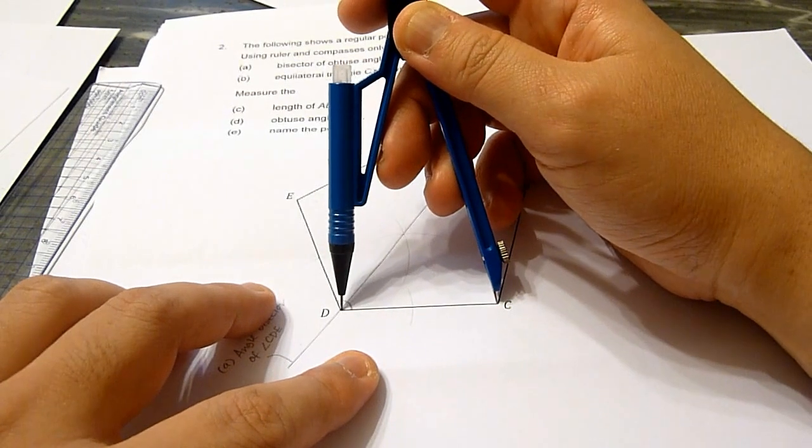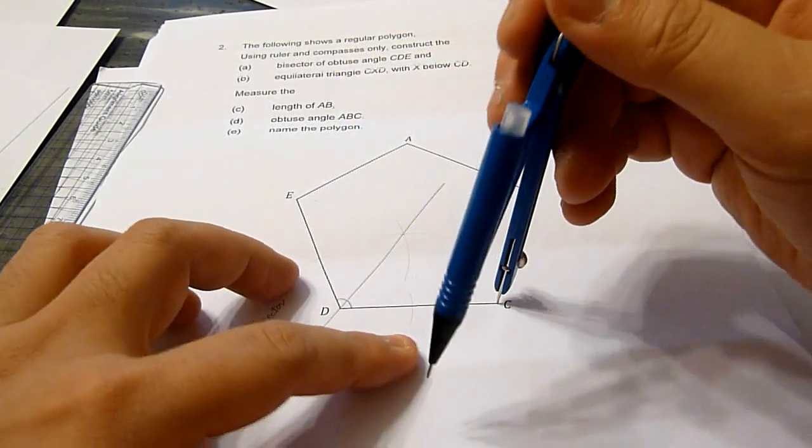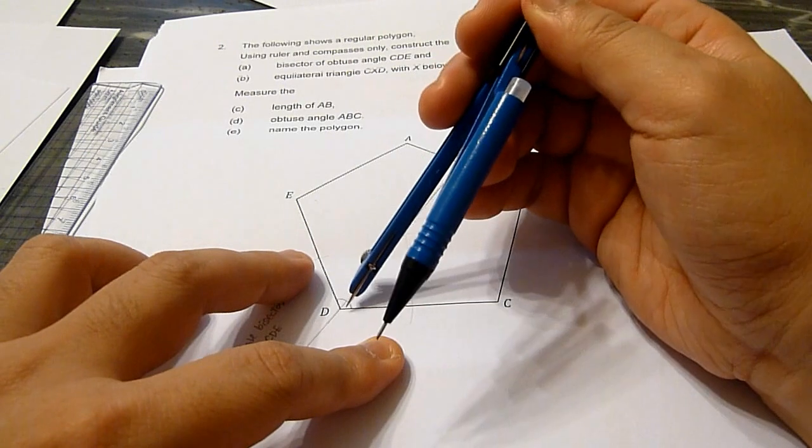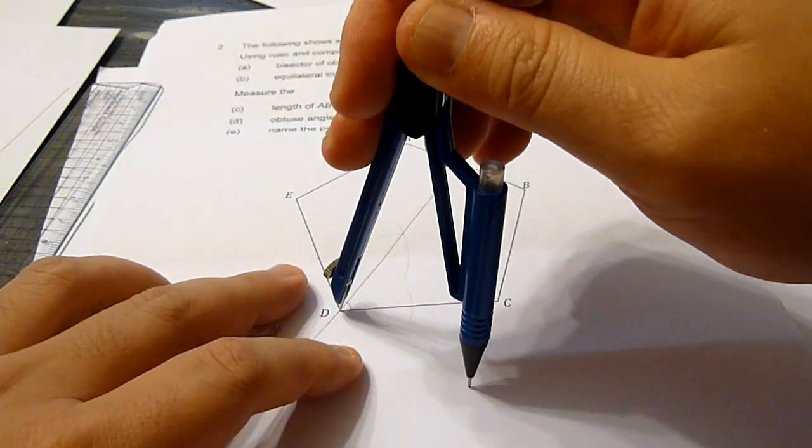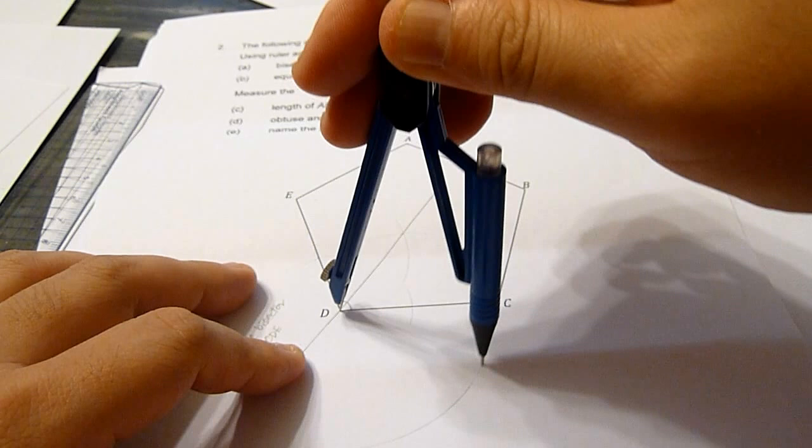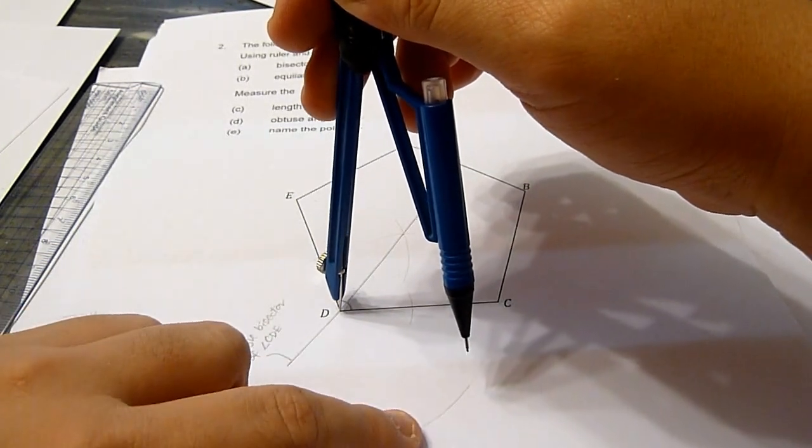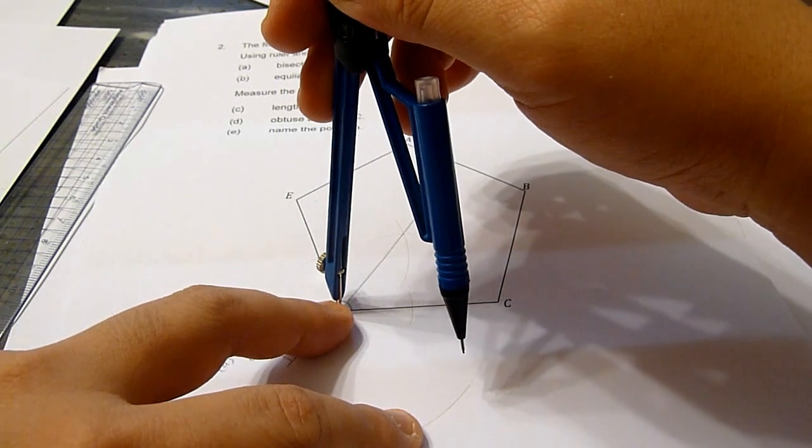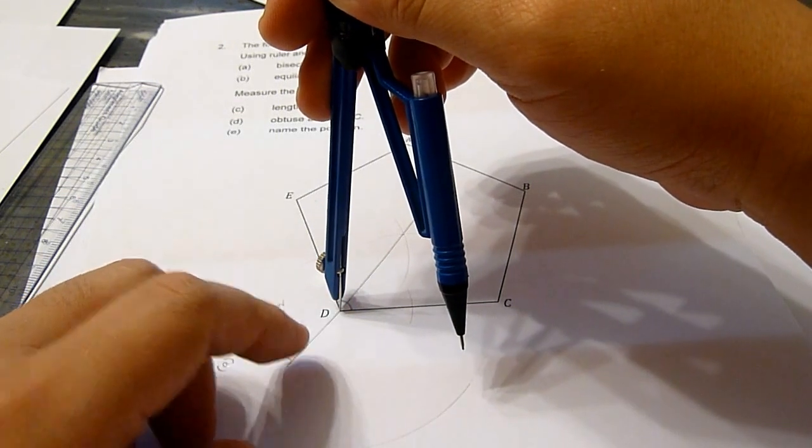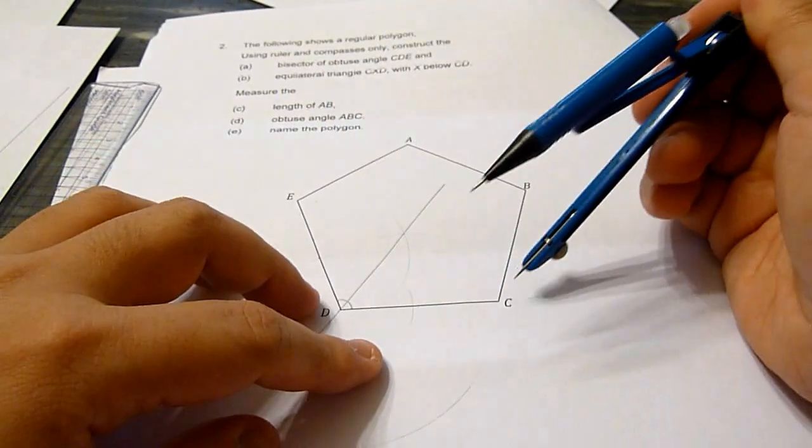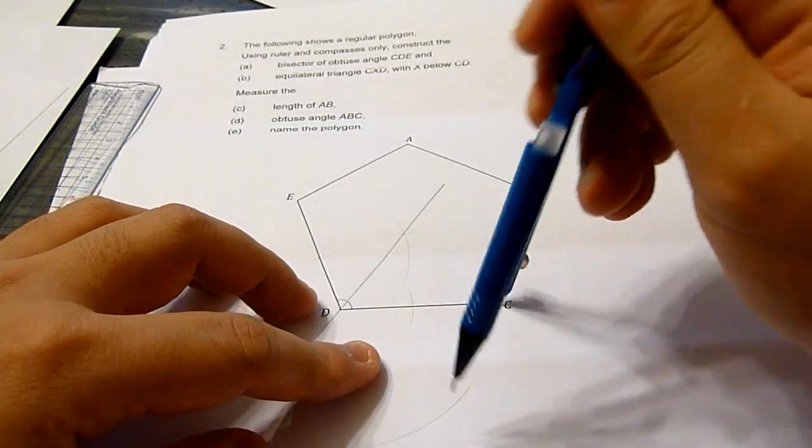We measure CD and at point D, make an arc. This means any point along the arc, when joined to point D, will be the same distance as D to C. Do the same thing at point C.